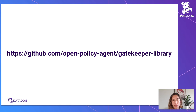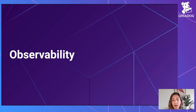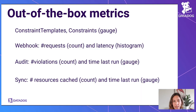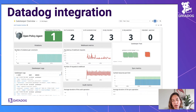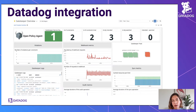The Gatekeeper library is part of the OPA project, so again completely CNCF open source. Another thing I love about Gatekeeper is that it comes with observability baked in. You have out-of-the-box metrics like the number of constraints in place, number of requests to a webhook and latency, number of violations, etc. With those metrics, there's also an out-of-the-box integration with Datadog. So if you're a Datadog user and a Gatekeeper user, there's nothing else you need to do — it will be integrated for you directly, and you'll have an out-of-the-box dashboard.